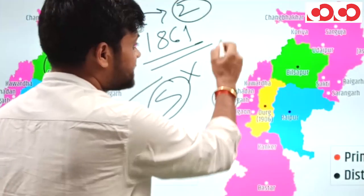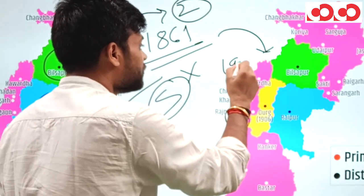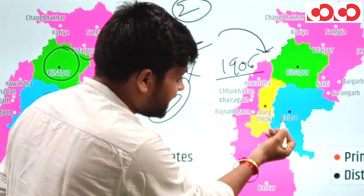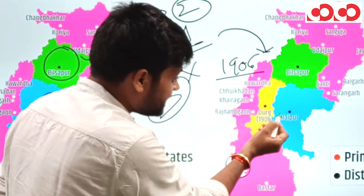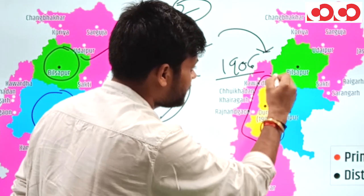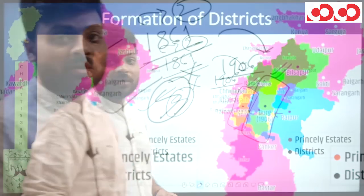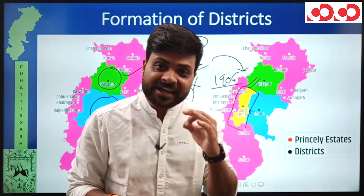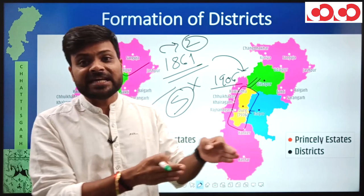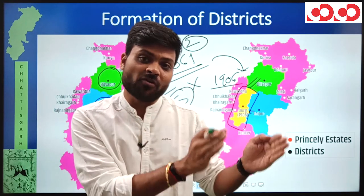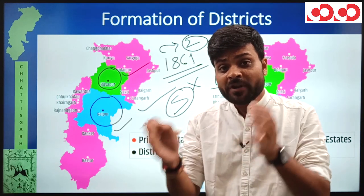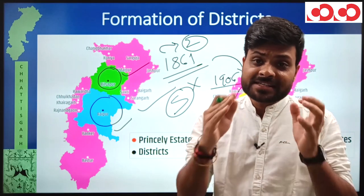Coming to the next phase — the year 1906. In this year, the western part of the present Raipur district was carved out to form a new Durg district. So in 1906, only one district was formed — Durg — by reorganizing the western part of Raipur district. These were the two phases before independence.